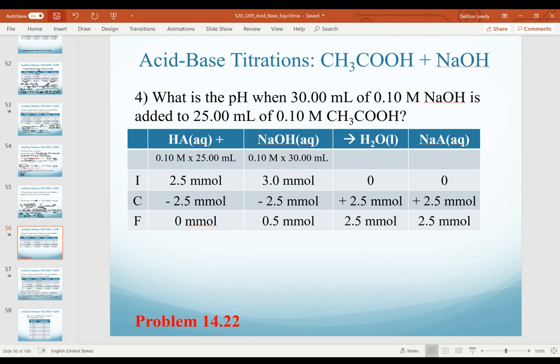We have our change table set up here where we have calculated the initial millimoles of our weak acid and our strong base. As we can see here, we have now surpassed the equivalence point and I can tell that because my sodium hydroxide is now my excess reagent. I have excess sodium hydroxide left over. Notice my weak acid has now become my limiting reagent and is used up.